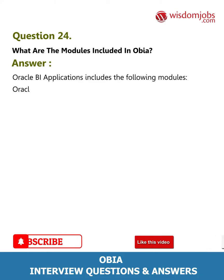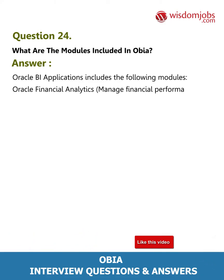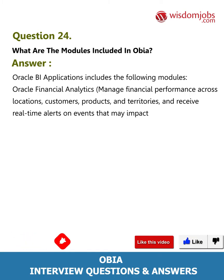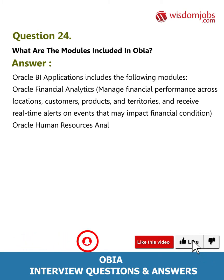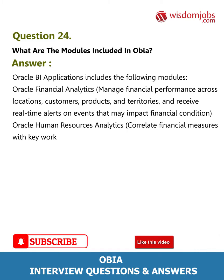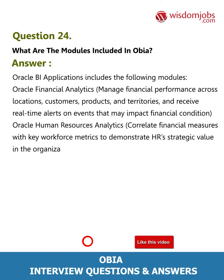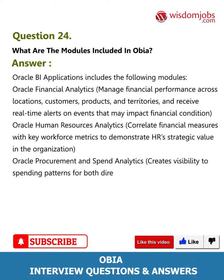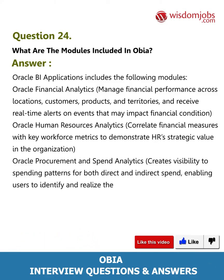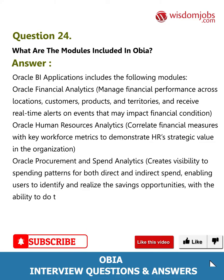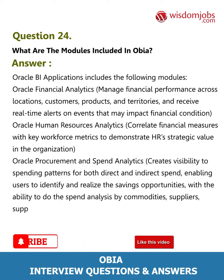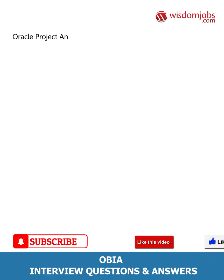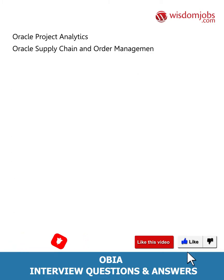Question 24: What are the modules included in OBIA? Answer: Oracle BI Applications includes Oracle Financial Analytics for managing financial performance across locations, customers, products, and territories with real-time alerts. Oracle Human Resources Analytics correlates financial measures with workforce metrics. Oracle Procurement and Spend Analytics provides visibility into spending patterns. It also includes Oracle Project Analytics and Oracle Supply Chain and Order Management Analytics, among others.